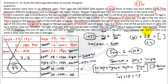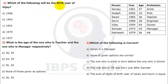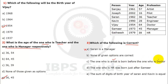Two positions remain. The last clue states: the one who is artist is older than the one who is manager. Looking at ages 57 and 45 for the remaining positions — the artist is older, so Sanjay (57) is the artist and the other (45) is the manager. All persons, ages, birth years, and professions are now allocated.